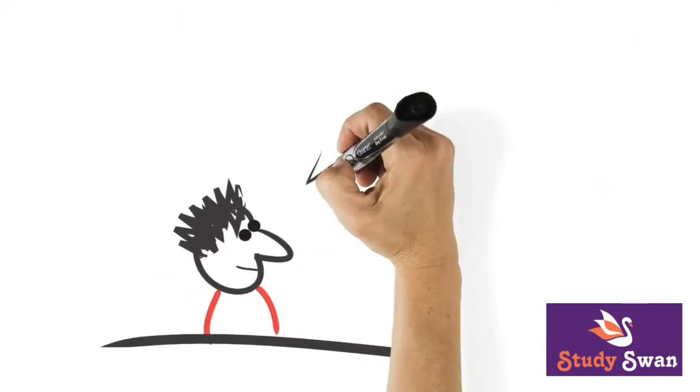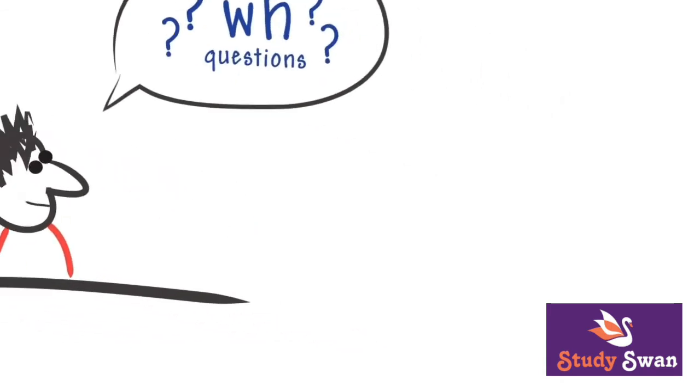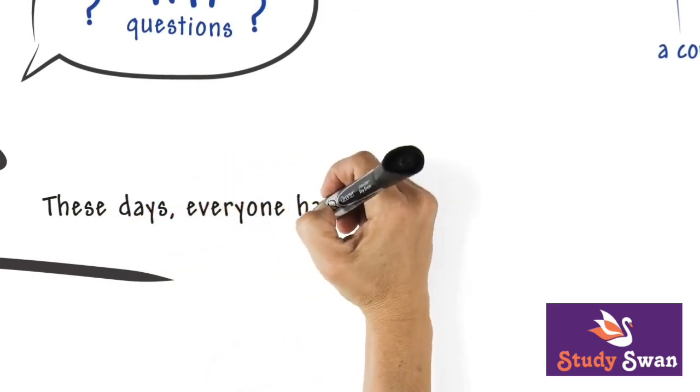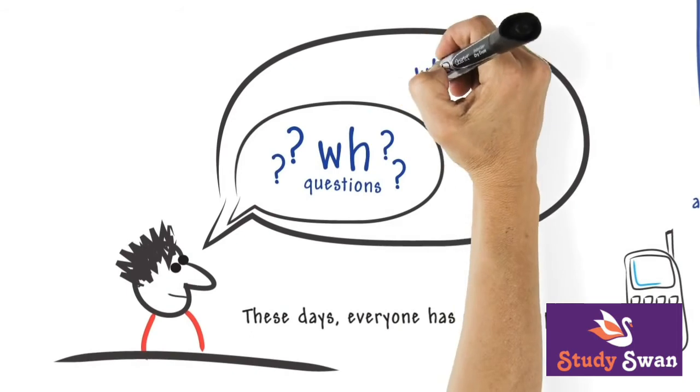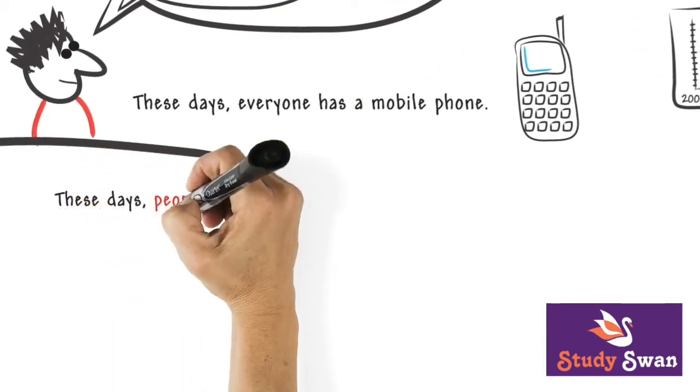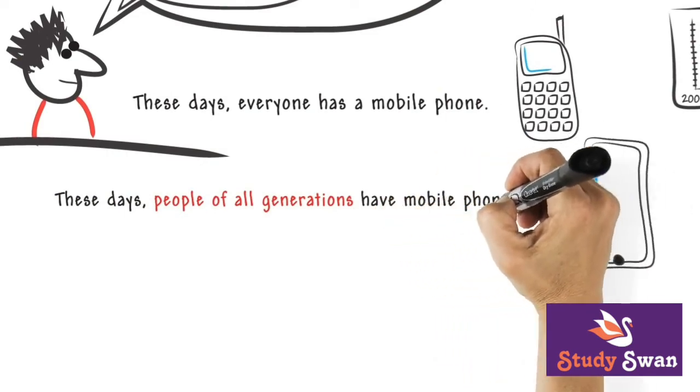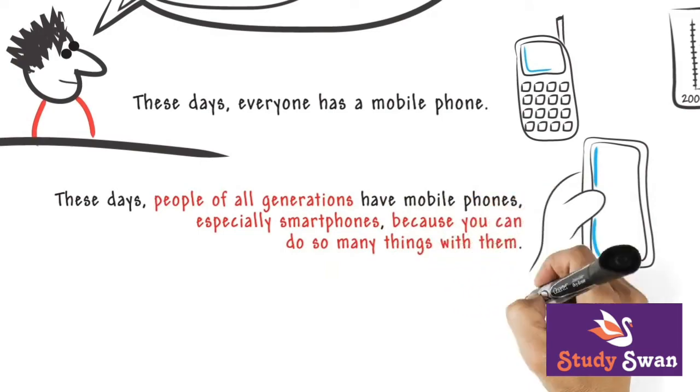For example, ask yourself some WH questions to see what else you can add to the original sentence. For instance, these days everyone has a mobile phone. Think to yourself: who, what, why? These days, people of all generations have mobile phones, especially smartphones, because you can do so many things with them.